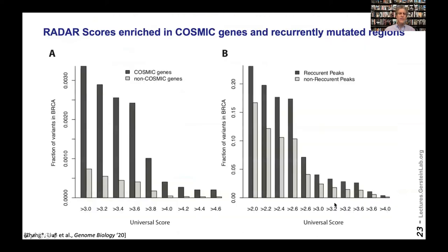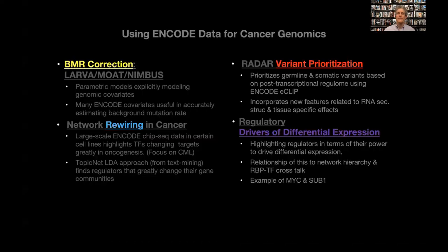We find that our procedure gives higher scores to COSMIC genes — known cancer genes — than others. It also tends to give higher scores to recurrently mutated regions, for instance in breast cancer, which gives us confidence that the score is useful in a cancer context.